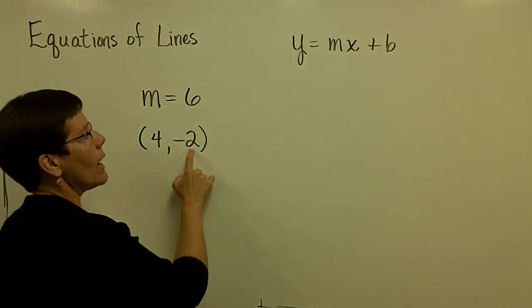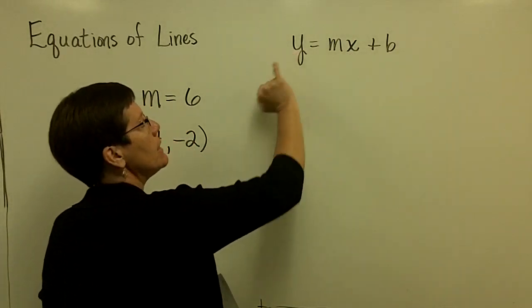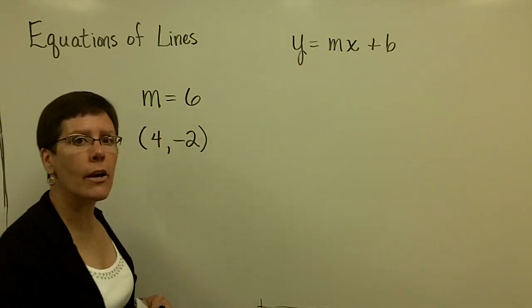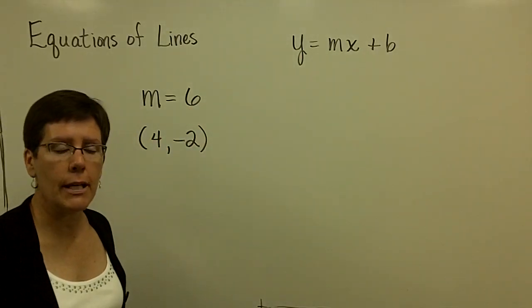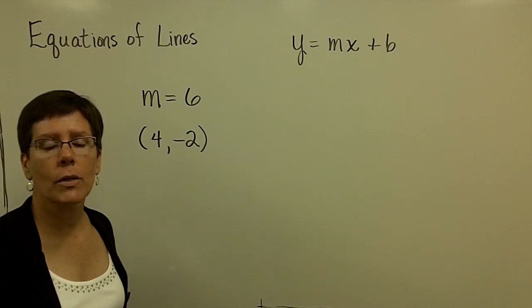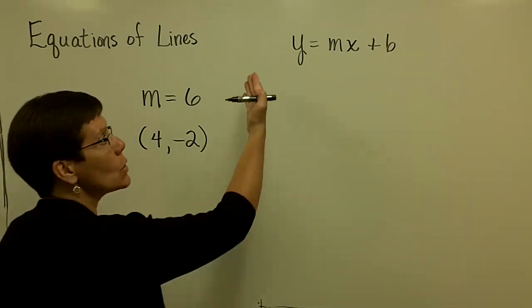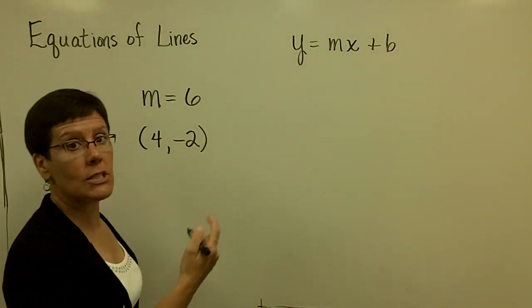Given x and y, which you can put in here and here, and given the slope, which you can put in right there, then you can solve for the letter b, which is the y-value in the y-intercept, and you can write the equation in slope-intercept form. Let's do that for this problem.